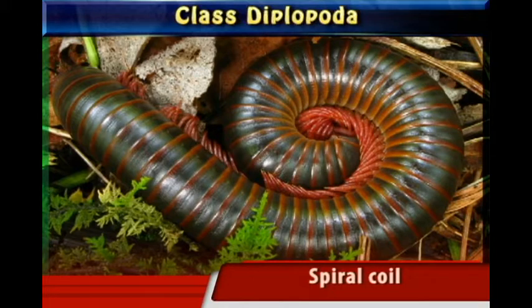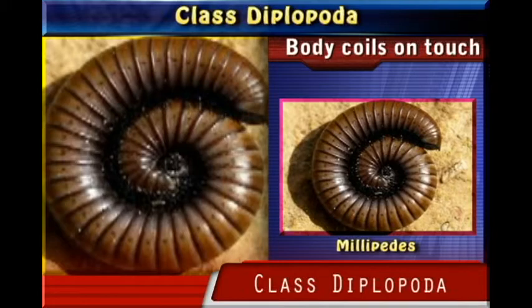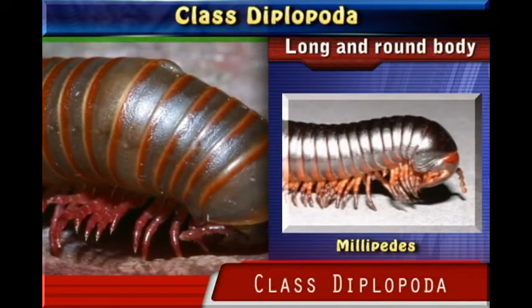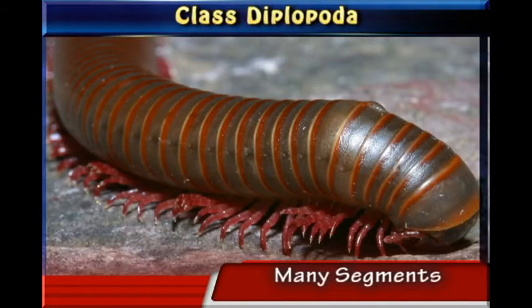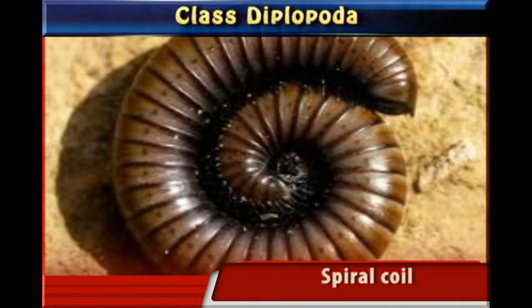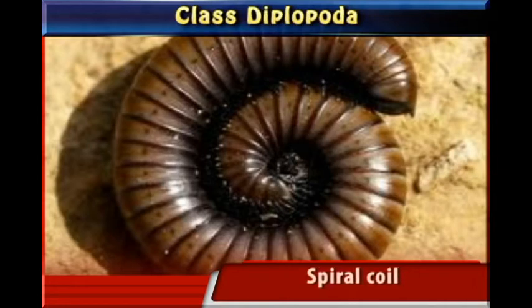When their body is touched, the body coils and forms a ball or a spiral. They also have a pair of antennae. Millipedes are terrestrial organisms with long rounded bodies, many segments, and two pairs of legs per segment. When touched, a millipede will coil or form a spiral. They live on land.